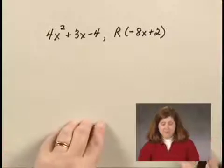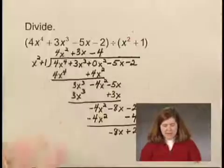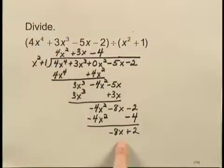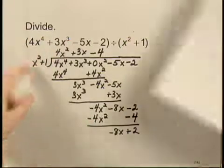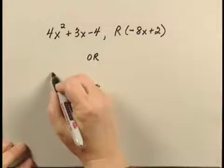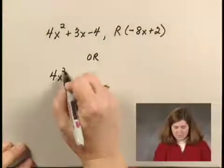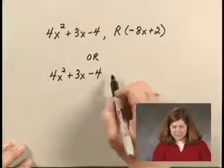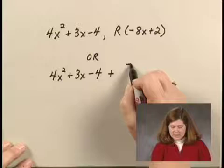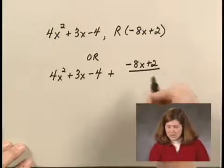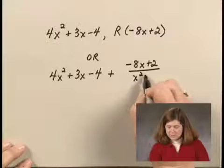Or I can write it as this quotient plus the remainder divided by the divisor. So I can also write this as 4x^2 + 3x - 4 + (-8x + 2)/(x^2 + 1). Both of these are acceptable ways of writing the answer to this division problem.